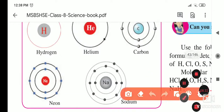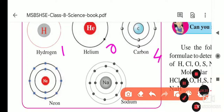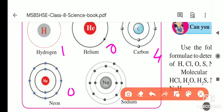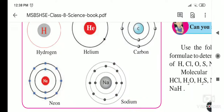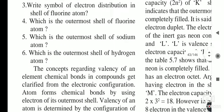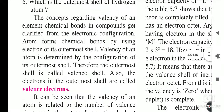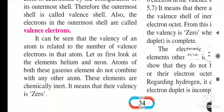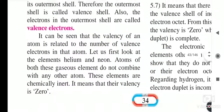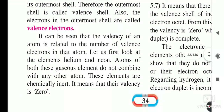So in this way we find valencies: hydrogen valency is 1, helium valency is 0, carbon valency is 4, neon valency is 0, and sodium valency is 1.